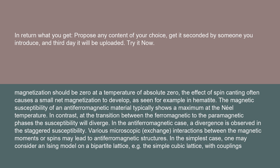The magnetic susceptibility of an antiferromagnetic material typically shows a maximum at the Néel temperature. In contrast, at the transition between the ferromagnetic to the paramagnetic phases, the susceptibility will diverge. In the antiferromagnetic case, a divergence is observed in the staggered susceptibility.